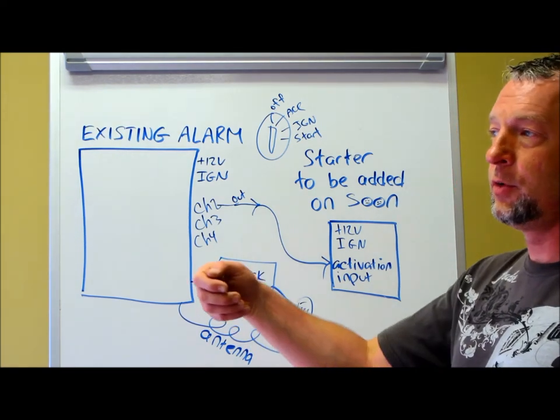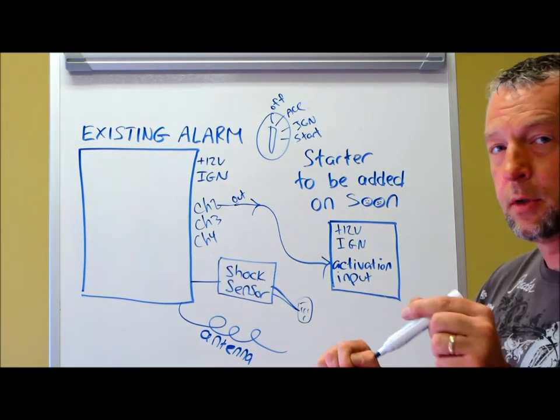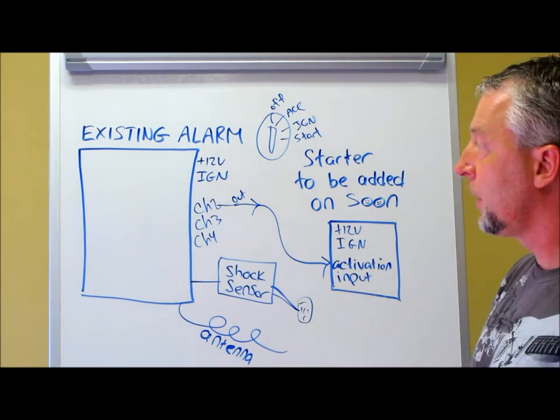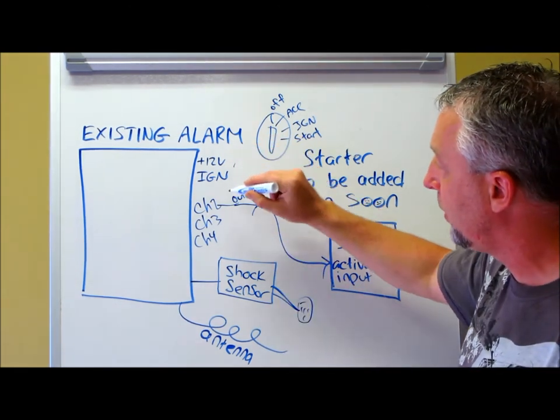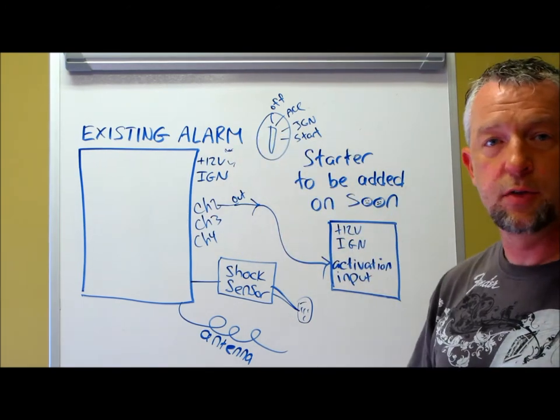So say for instance, you turn your car off, the alarm is seeing the ignition going off. Then I see the door open, door closed, then 30 seconds elapses, the alarm sets itself. If not seeing the correct power constant on 12 volts and on the other wire to show it ignition, it doesn't perform properly.